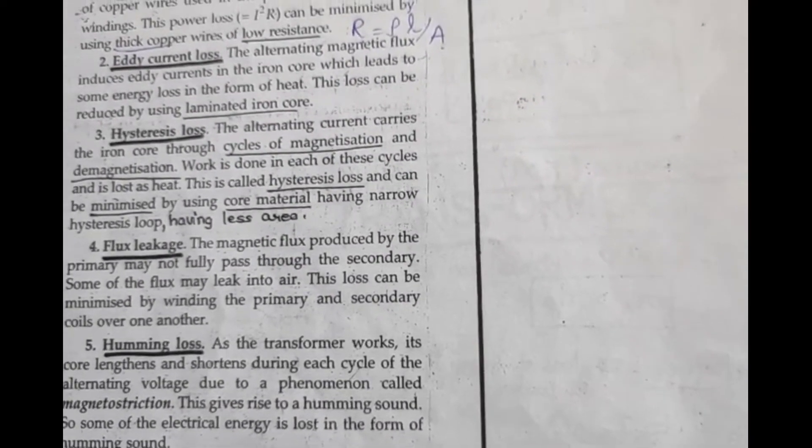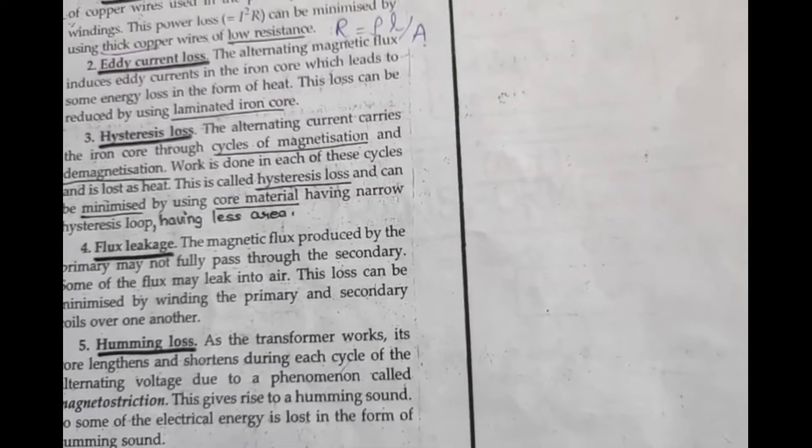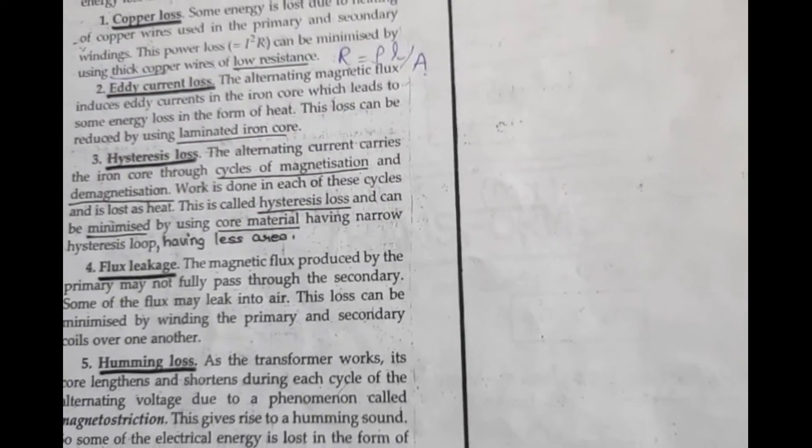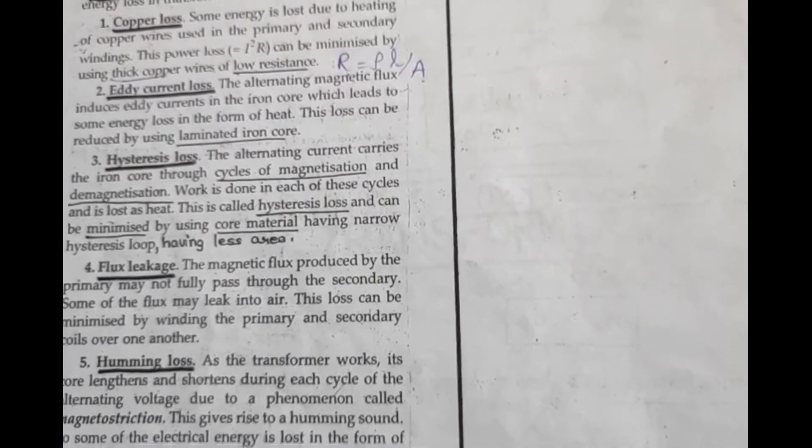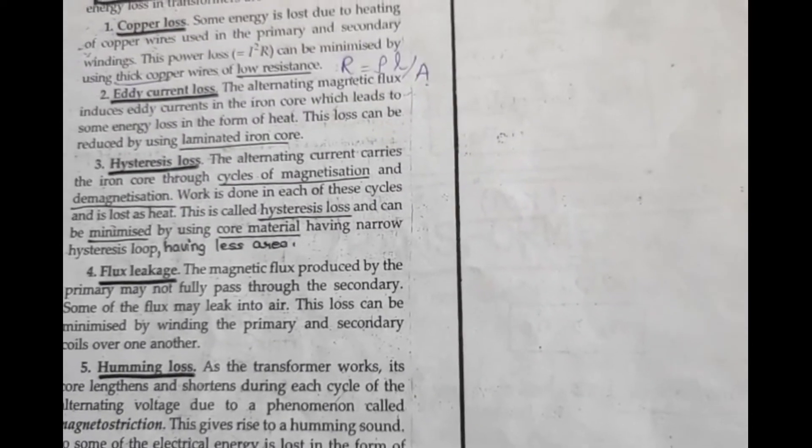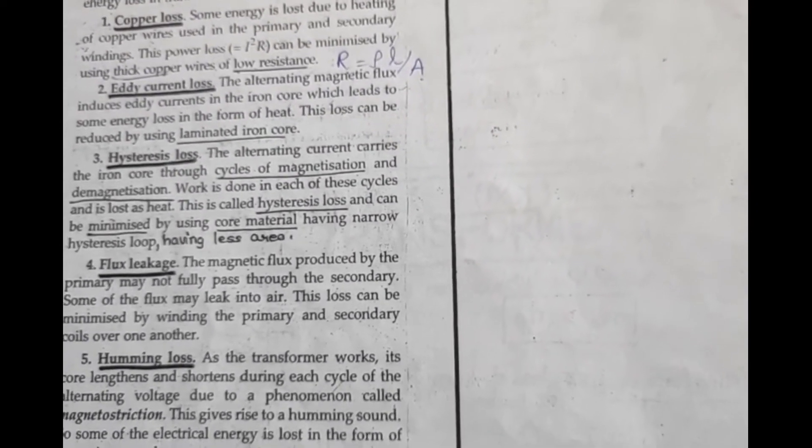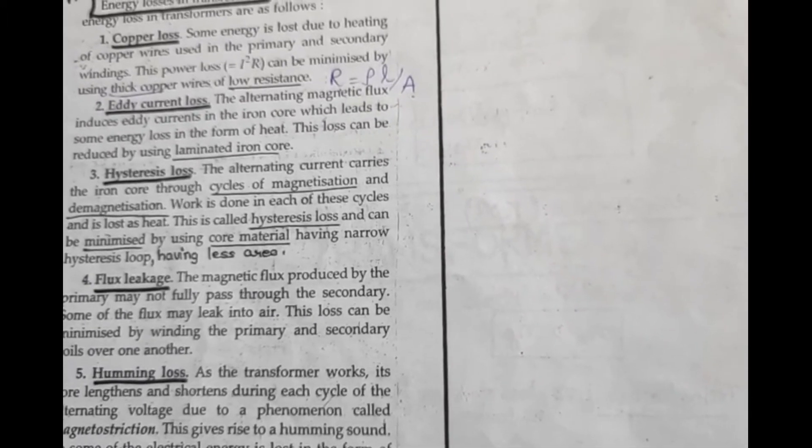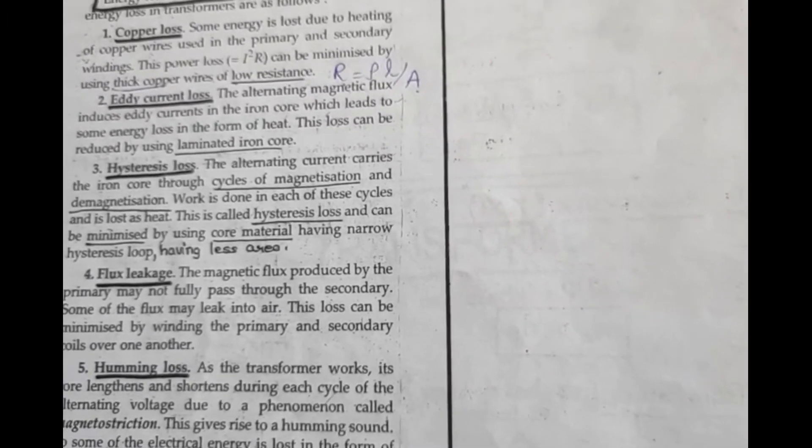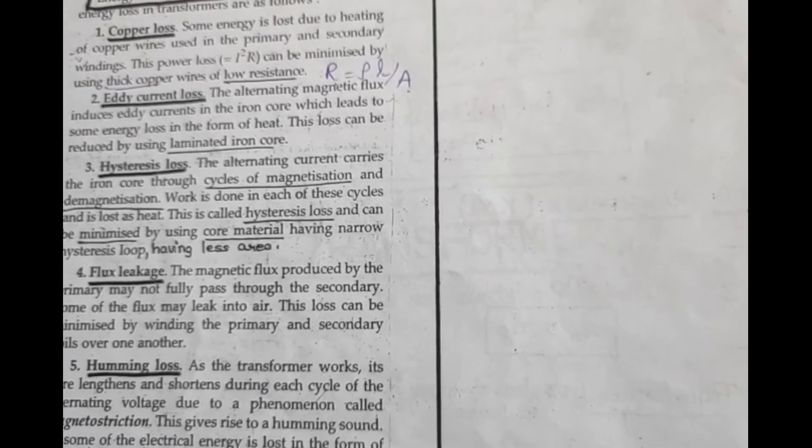Then there is hysteresis loss. You understand hysteresis loss. In the iron core, repeated magnetization and demagnetization causes losses in the form of heat. Hysteresis loss. And that's why we have used such material whose hysteresis loop area is small. For that, what material have we used? Iron core.